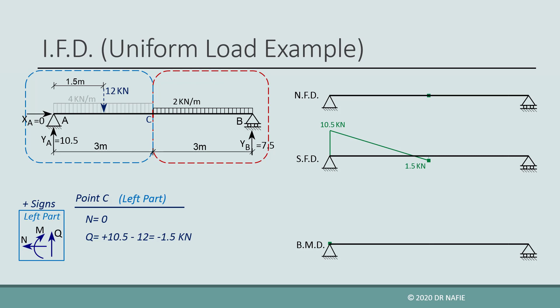The value of the moment will be calculated by taking the moment of all the forces in the left part about point C. The left part contains two forces: YA, which is multiplied by an arm of 3 m rotating in the positive direction, and the 12 kN equivalent force multiplied by an arm of 1.5 m rotating in the negative direction. The resulting moment about C will be positive 13.5 kNm. The evaluated value is drawn on the diagram at point C.